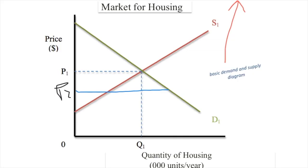That's where we get our P2, and then we have two new important spots. We have created another quantity out here we're going to call Q2, and another quantity over here which we are going to call Q3. I'm going to make this look a little bit better in a second, but for now let's just take a look at what this means in the marketplace for housing.